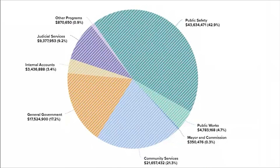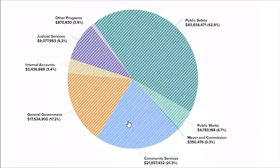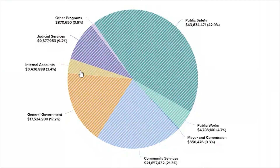This pie chart breaks down expenditures for all county funds by functional area for 2022. The largest functional area for the county is public safety, making up 42.9% of county expenditures. Then we have community services at 21.3%, general government at 17.2%, judicial services at 9.2%, public works at 4.7%, internal accounts at 3.4%, other programs at 0.9%, and the mayor and commission at 0.3%.